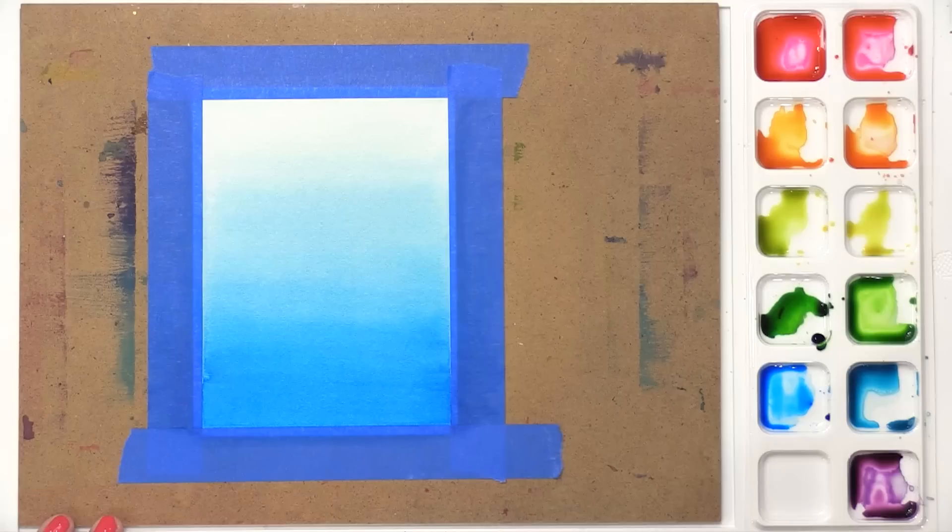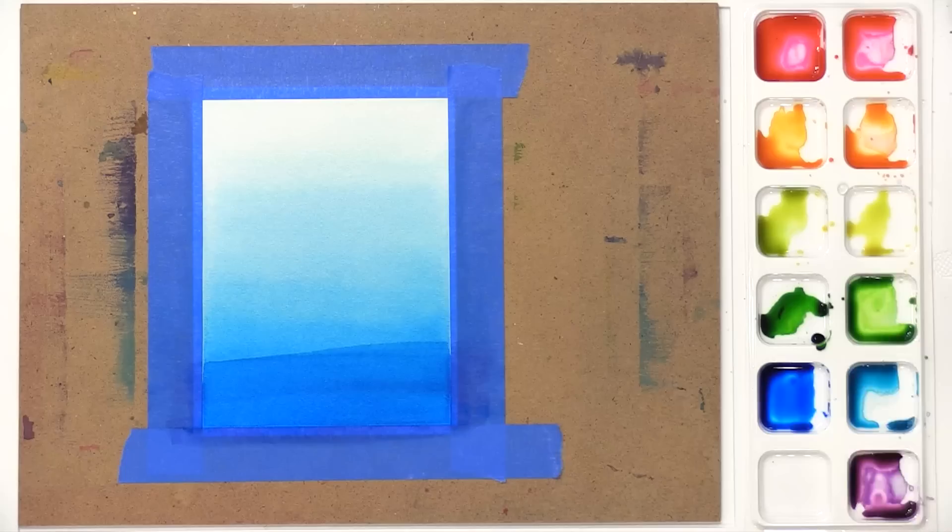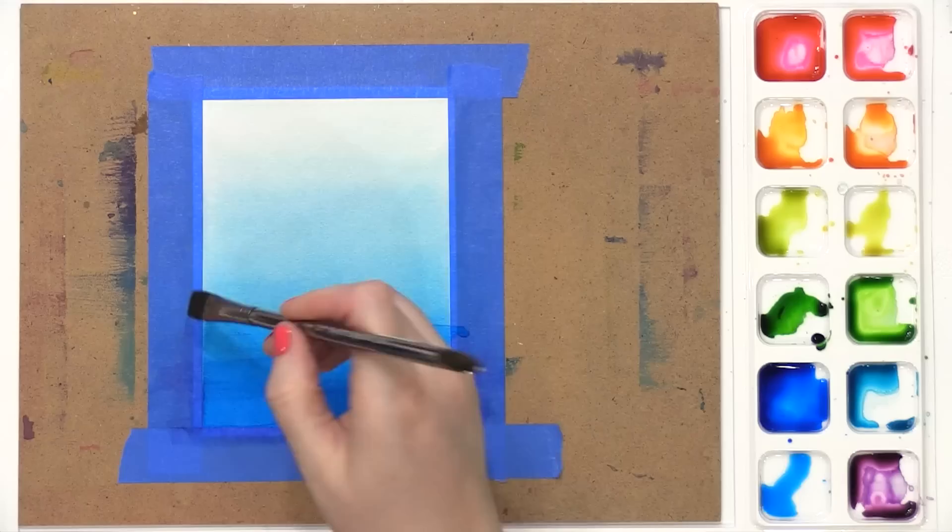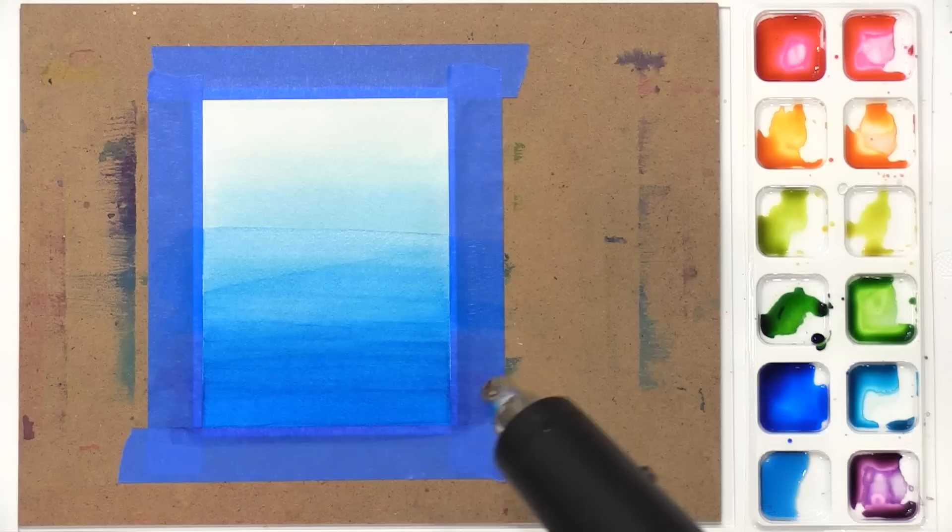But I decided that I really wanted to have sort of overlapping horizontal stripe areas. So I'm going to paint a little bit more, and I'll dry it, and then I'm gonna come in and paint further up, dry that, and then just work my way all the way up to the top of this watercolor piece.